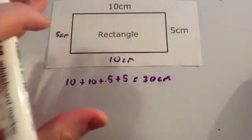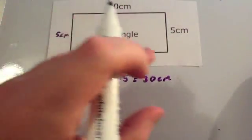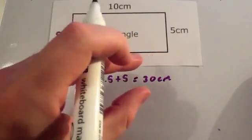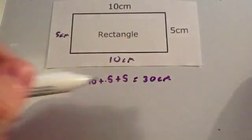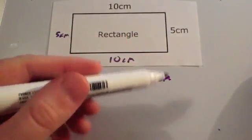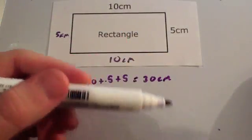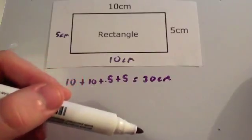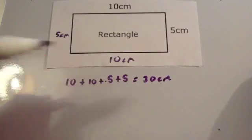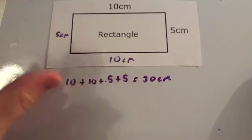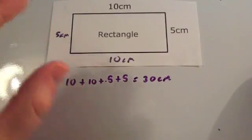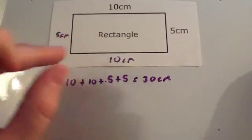So the perimeter of this shape would be thirty centimetres — that's just the distance around the outside. Don't get confused and put centimetres squared; you put centimetres squared whenever you're dealing with area. So the perimeter of this shape is thirty centimetres.